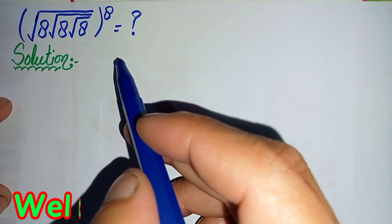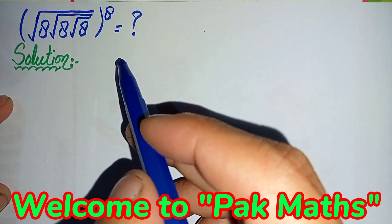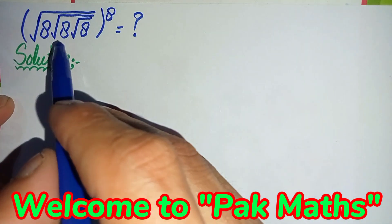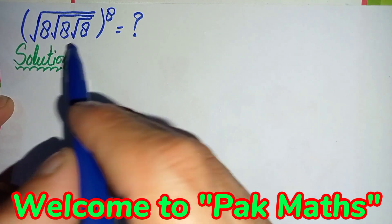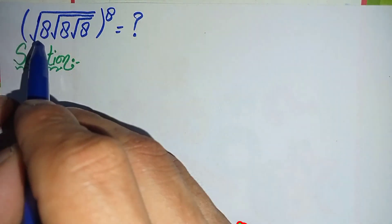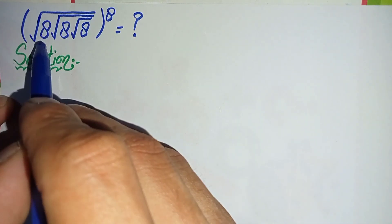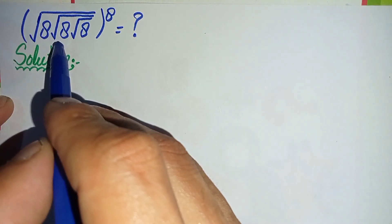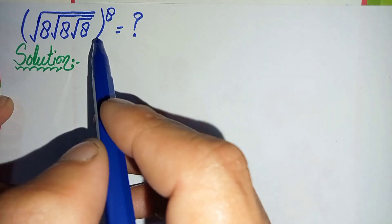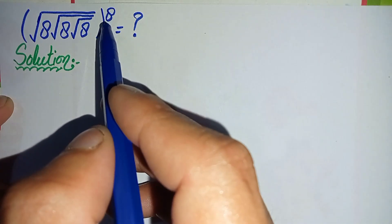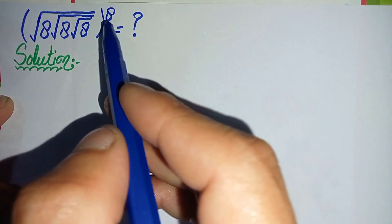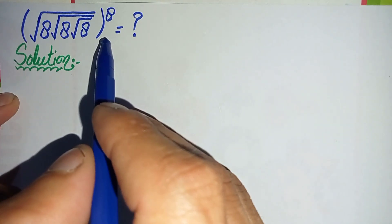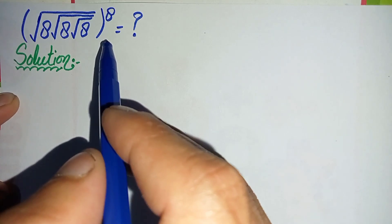Hello everyone, welcome to ParkMas. In this video I'm going to solve this nice square root math problem: square root of 8 times square root of 8 times square root of 8, whole raised to power 4 over 8. Here I will try to find the value of this square root problem.